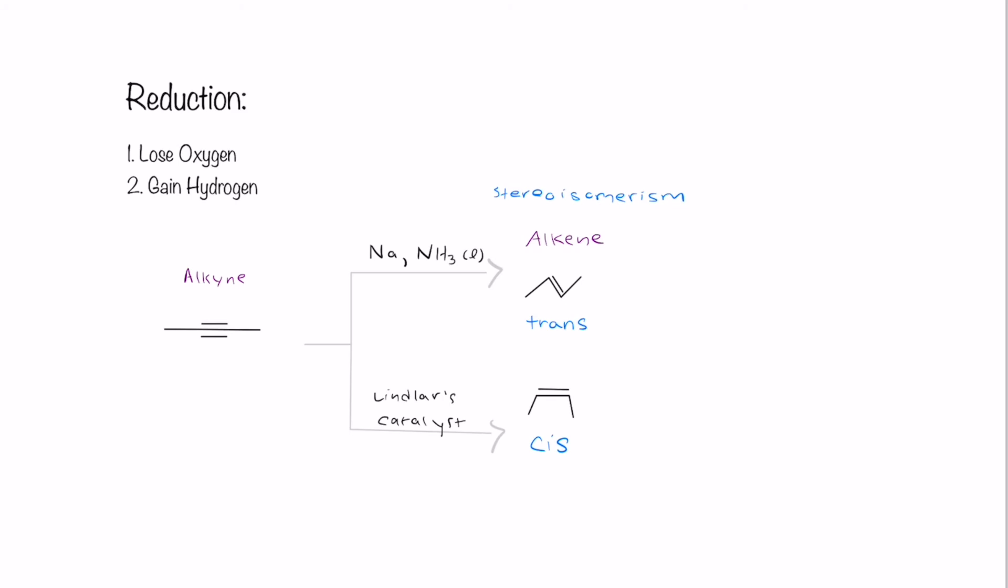And one more thing that I want to point out to you is that when we reduce this alkyne, we kept the amount of carbons the same. So this alkyne has four carbons. Remember that each point represents a carbon. And so each of these structures have four carbons as well. And we have to make sure that when we reduce our structures, we do not gain or lose any carbons, or else our answers will be marked wrong.